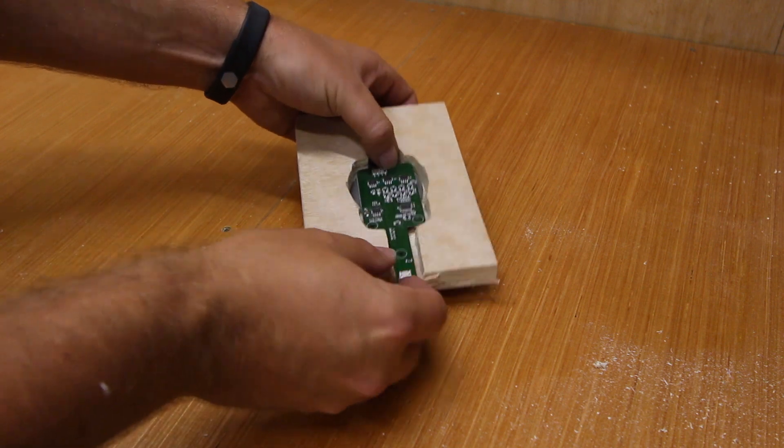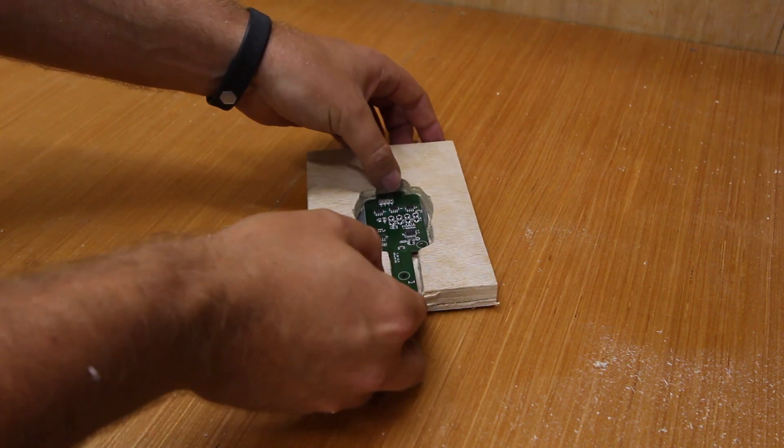As you can see, it now fits nicely inside and there's probably less than 2mm of ply left below the charging ring.